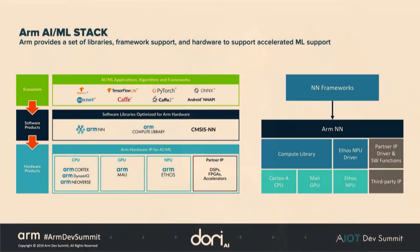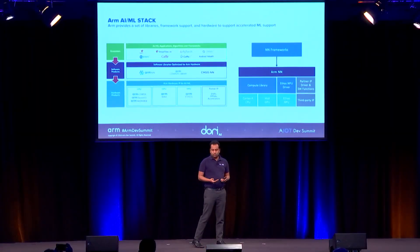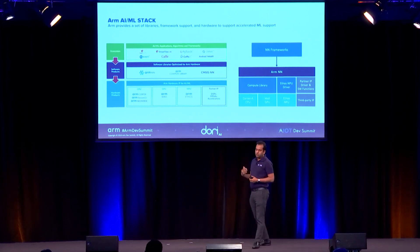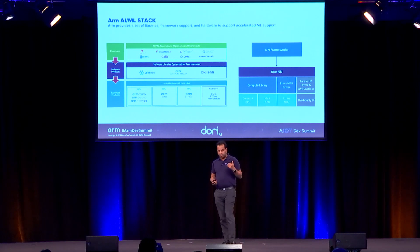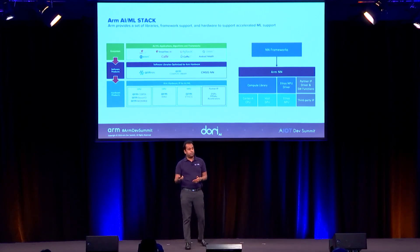ARM provides a similar stack, abstracting hardware and software in a similar fashion. They've provided the ARM NN SDK, which abstracts the underlying hardware scheduling for any of the major ML frameworks. Depending on what you're trying to optimize for — whether CPU, GPU, or the latest Ethos NPU — ARM provides underlying drivers and compute libraries so that you can target the right hardware for your application.